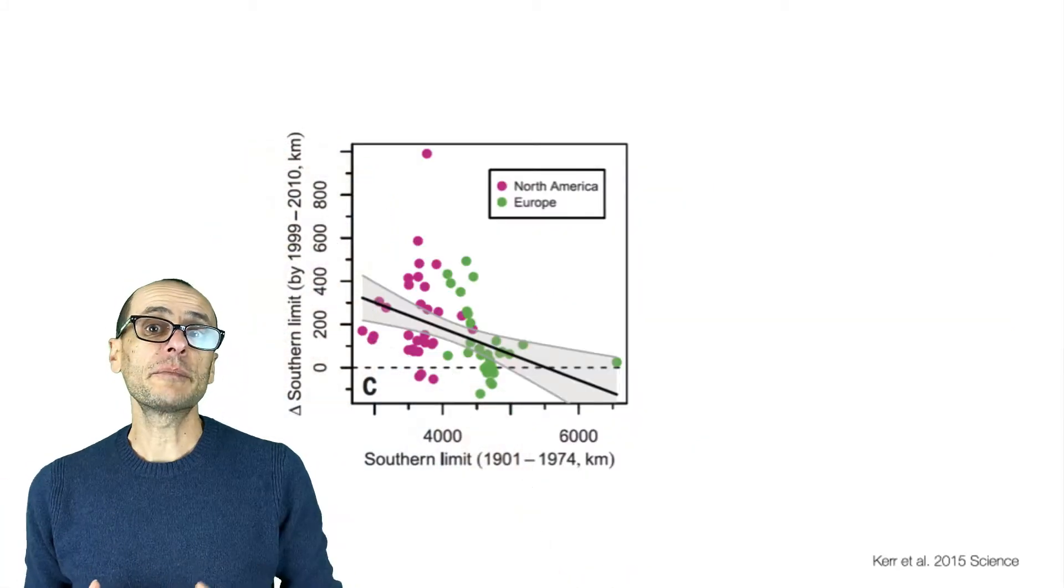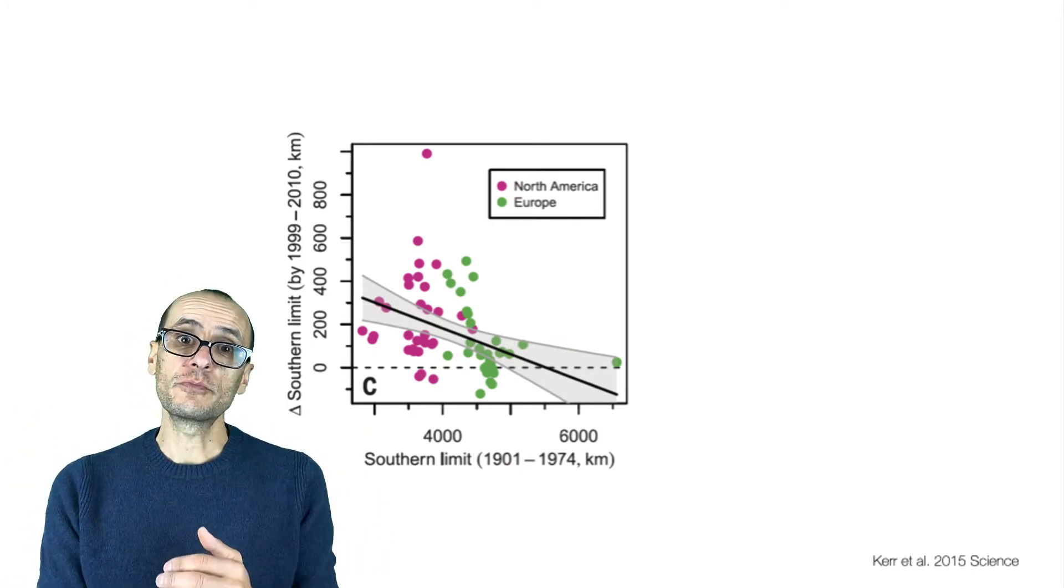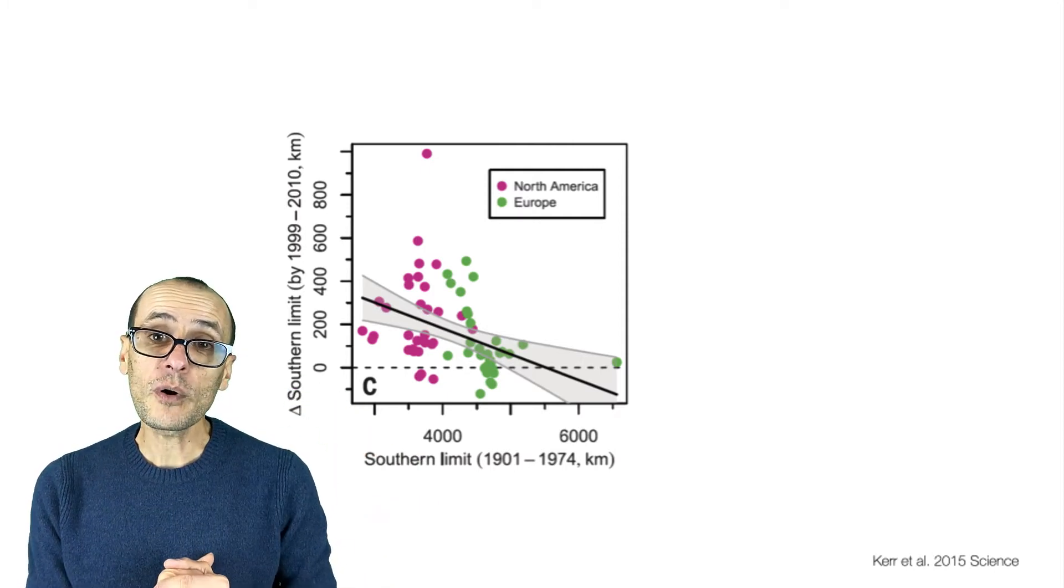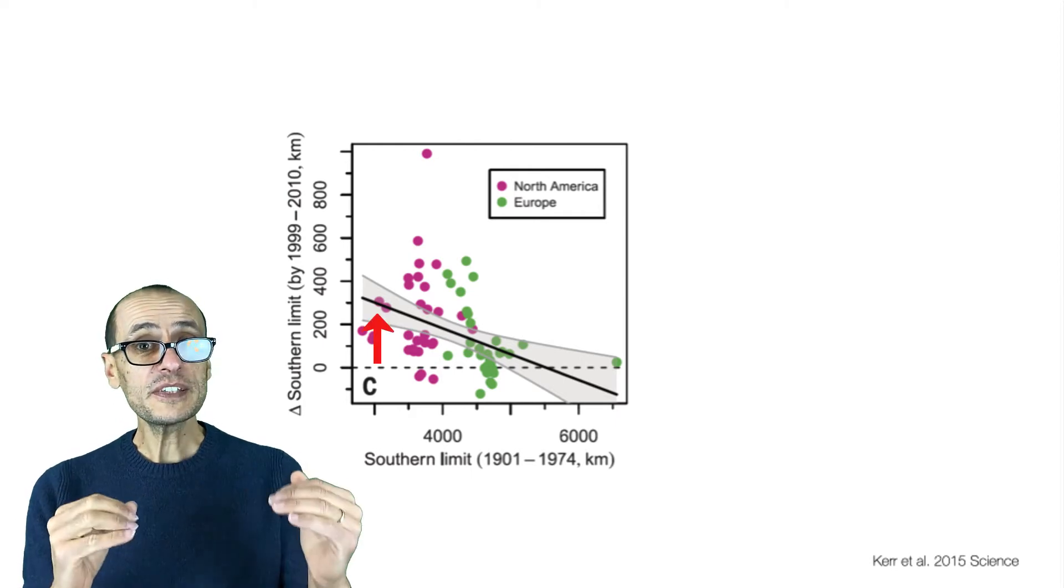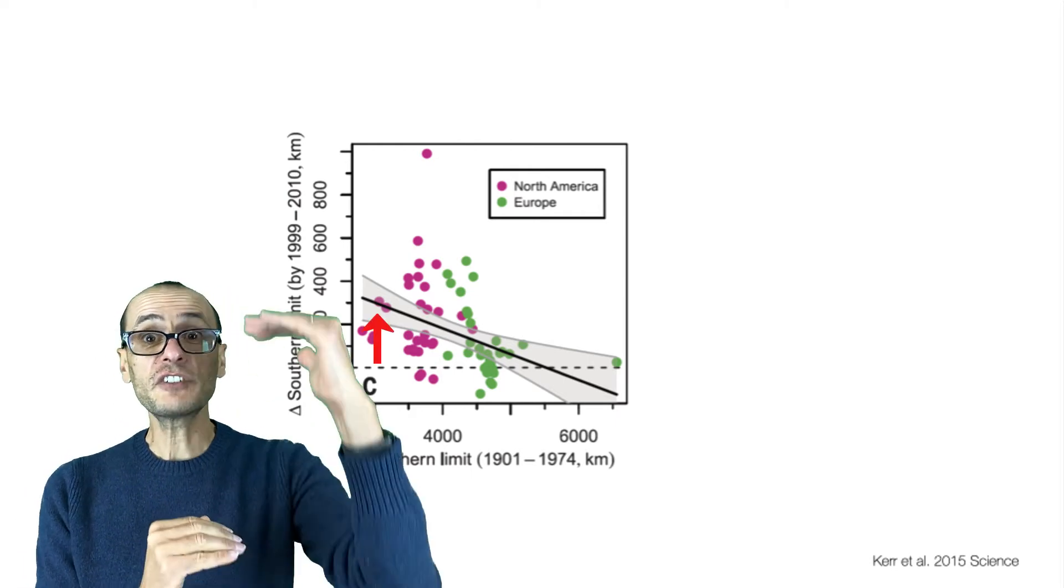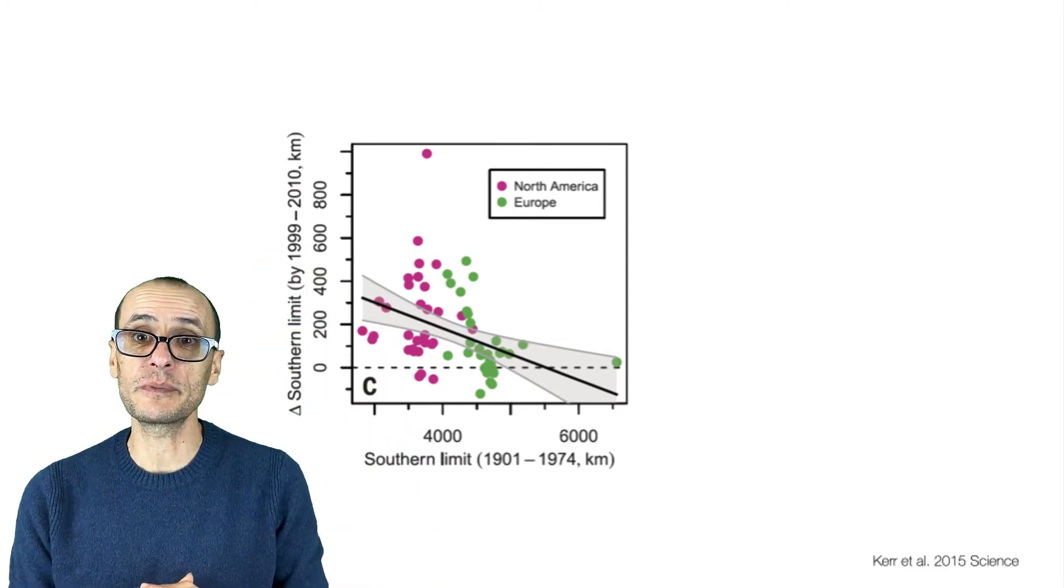So that's one prediction of how climate change is going to affect the ranges of insects. This study here by Jeremy Kerr at the University of Ottawa tried to see if there was any evidence for this. And what they found looks something like this. Indeed, if you look at the southern edges of a distribution of the species as they were between 1900 and 1974, and you compare it to where it is now in the last decade, what we see is that bees that were further south, where it was warmer, shifted north the most. This is almost 200 kilometers for some species.